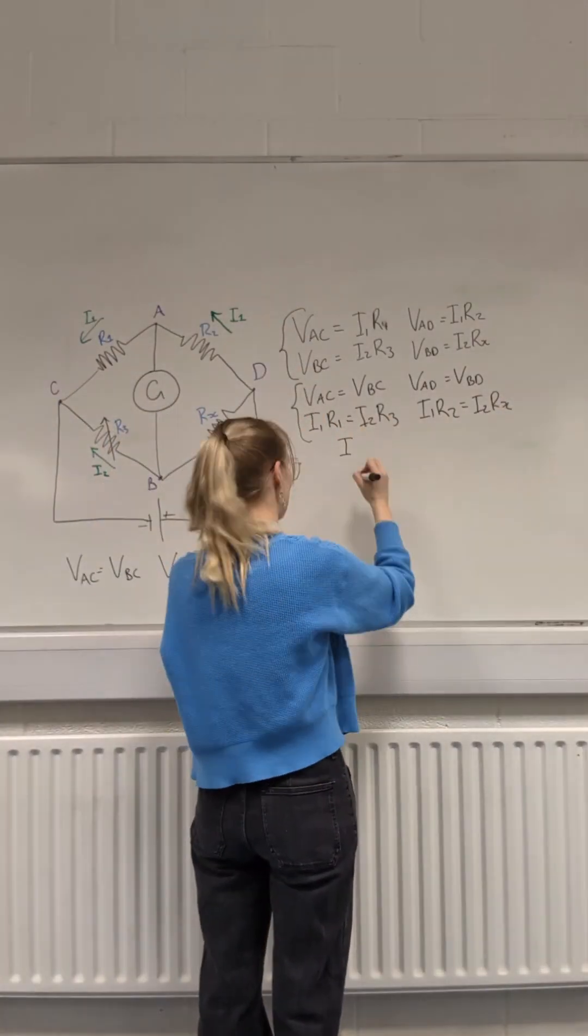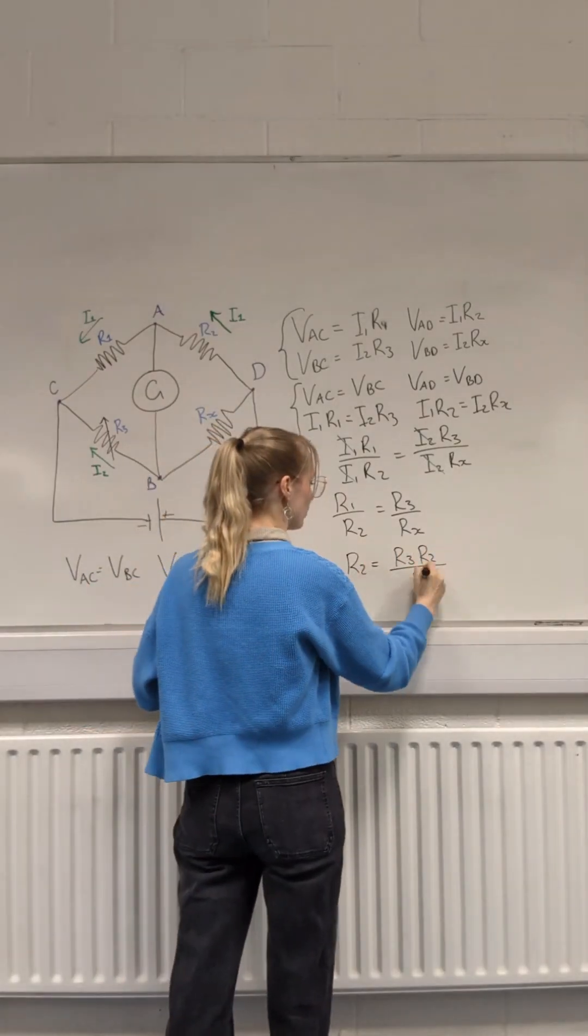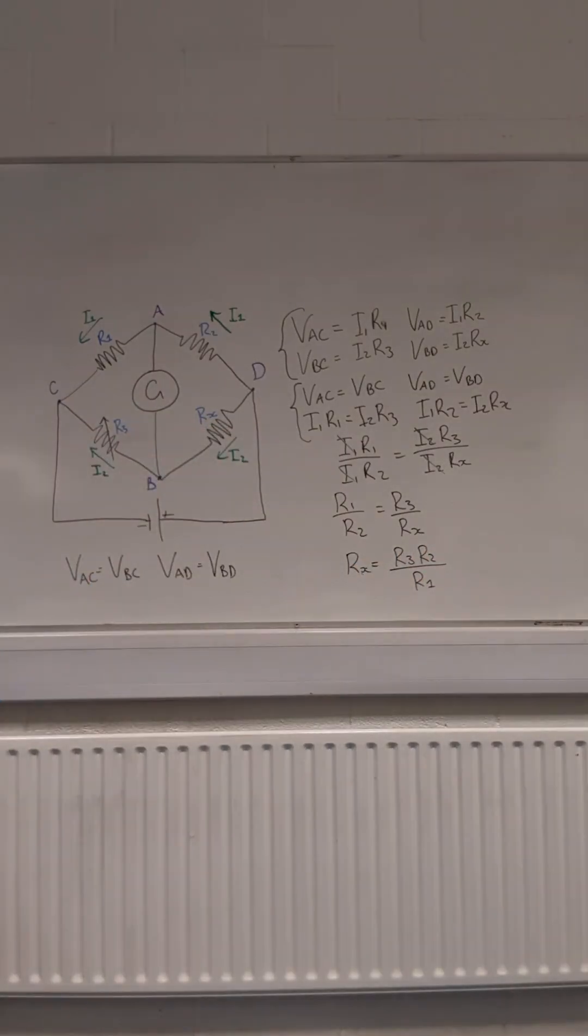We can divide the last equation in the first column by the last equation in the second column, beautifully cancel off the currents, and finally get an answer for the last resistance. We get the final expression of the unknown resistance: R2 times R3 over R1, R3 being the variable resistor.